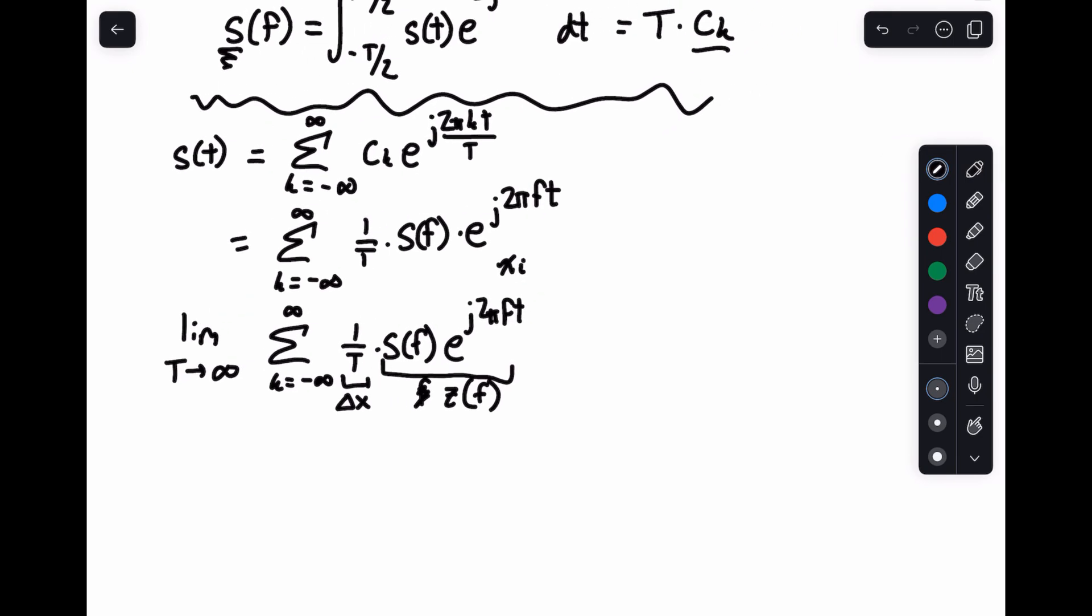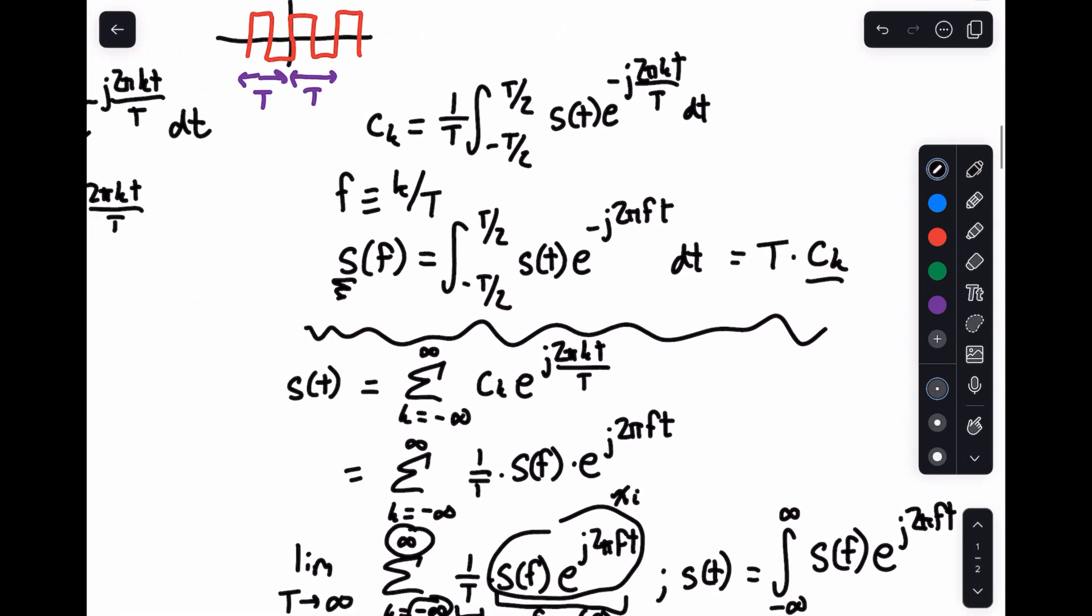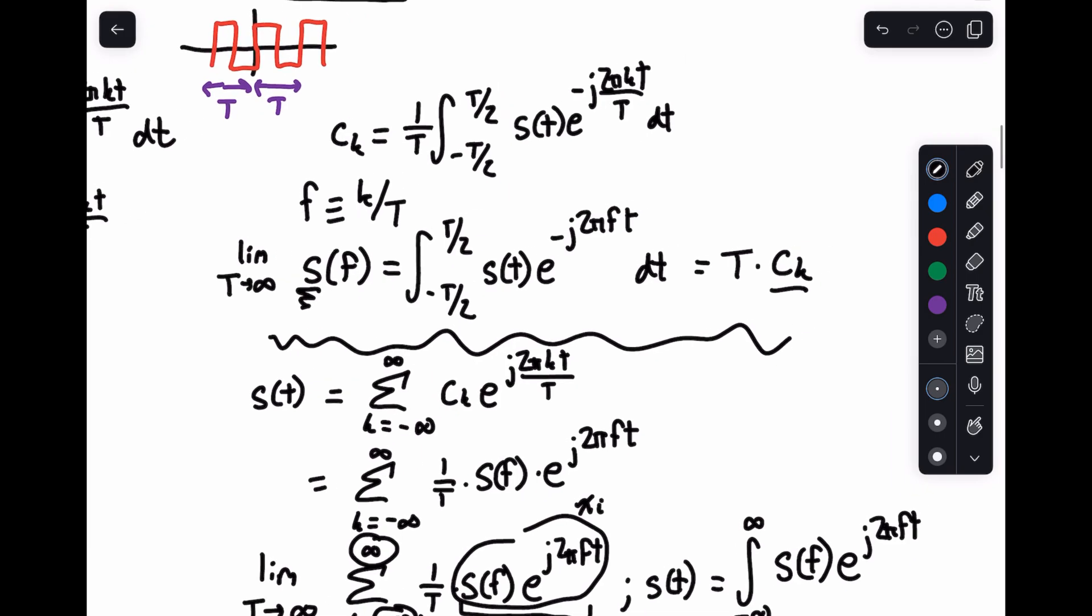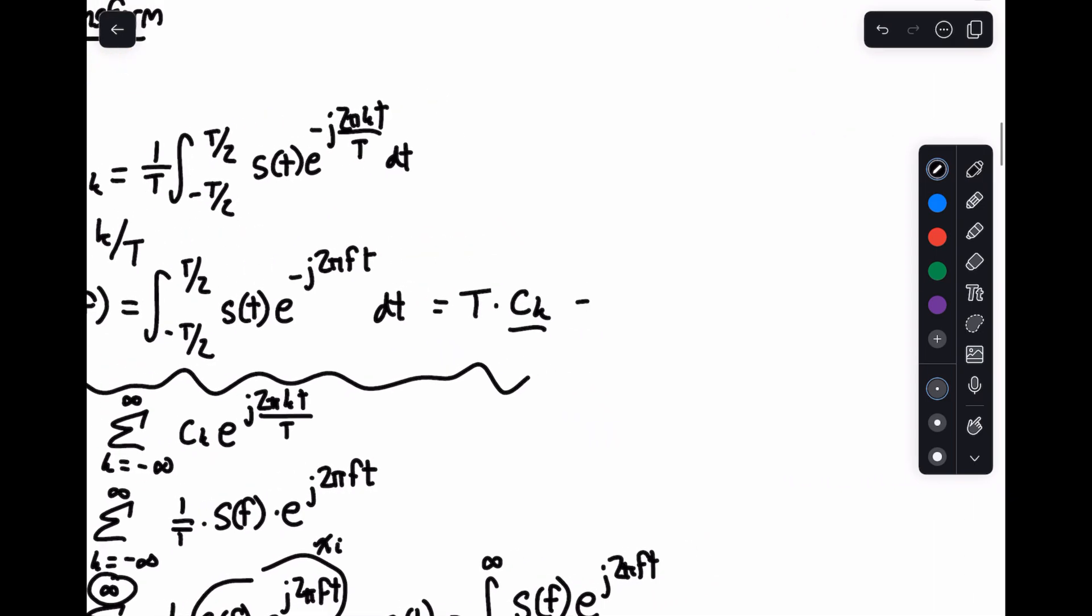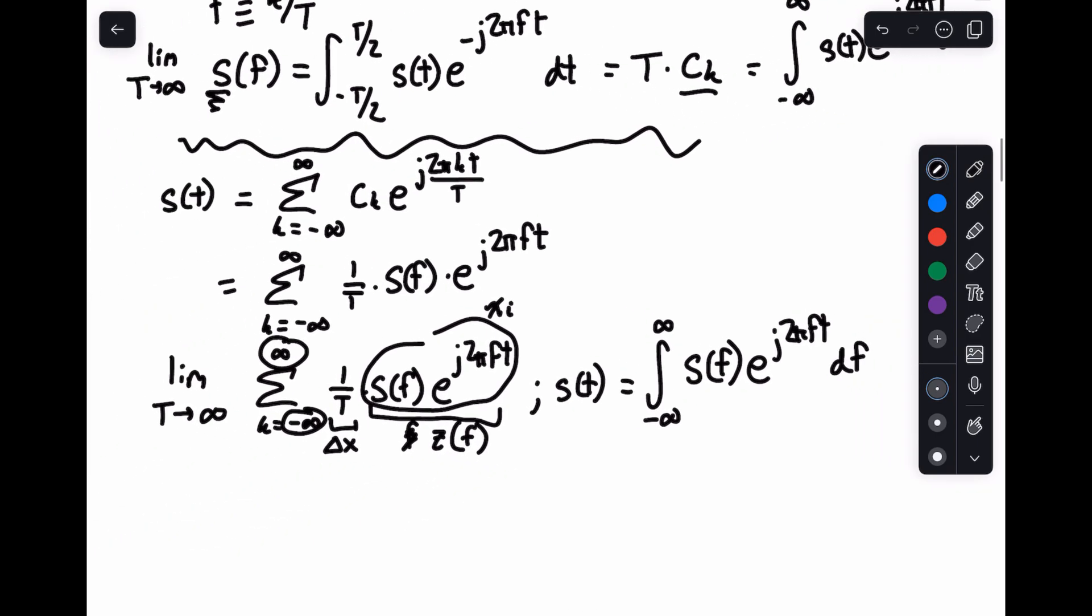And what you get out of this is your function of time s(t) equals the integral, now the integral by looking at the bounds of the sum, from minus infinity to infinity of S(f) e to the j 2π ft. And if we look at this part, if we take the limit as T goes to infinity of this function, now that we don't have the 1 over T here, we can do this. This is equal to the integral from minus infinity to infinity of s(t) e to the minus j 2π ft dt. This one is df because f is the piece that is basically shrinking down.